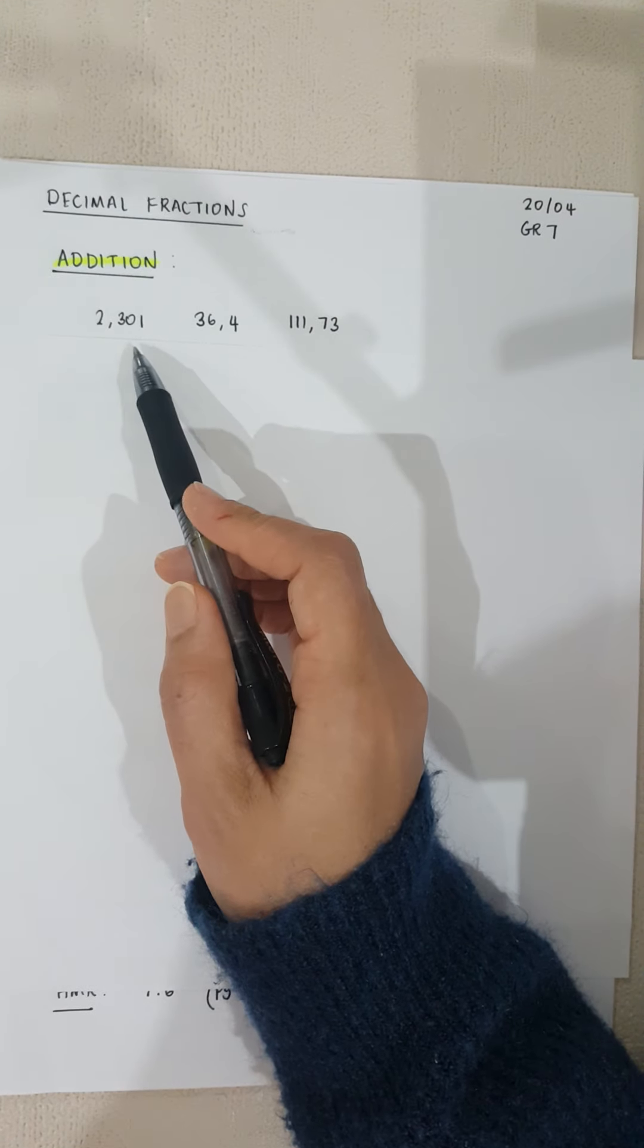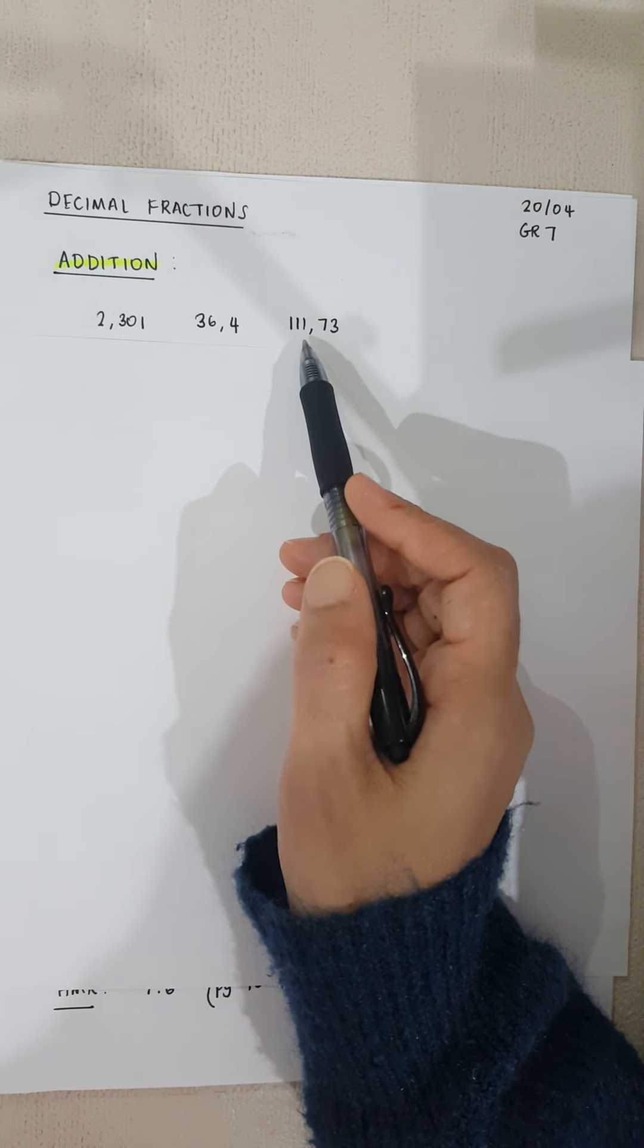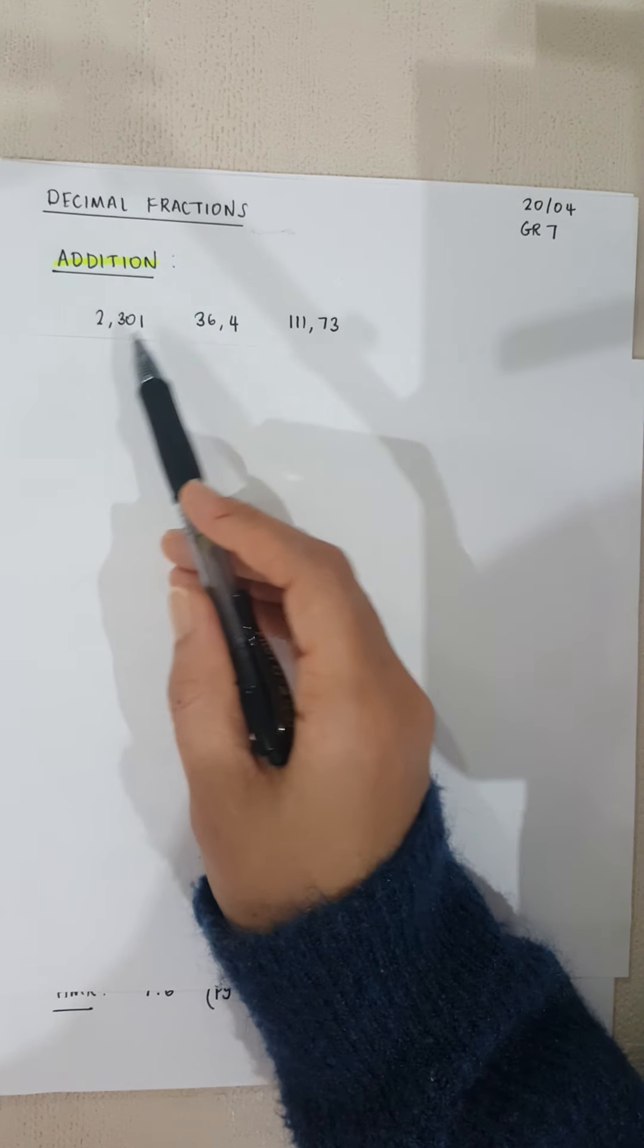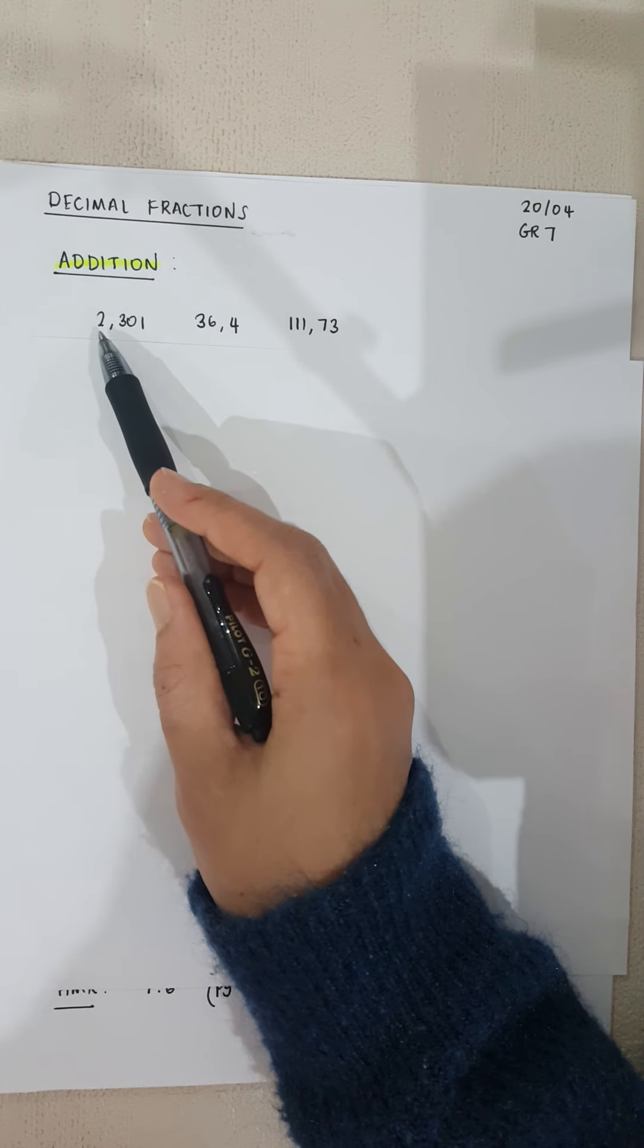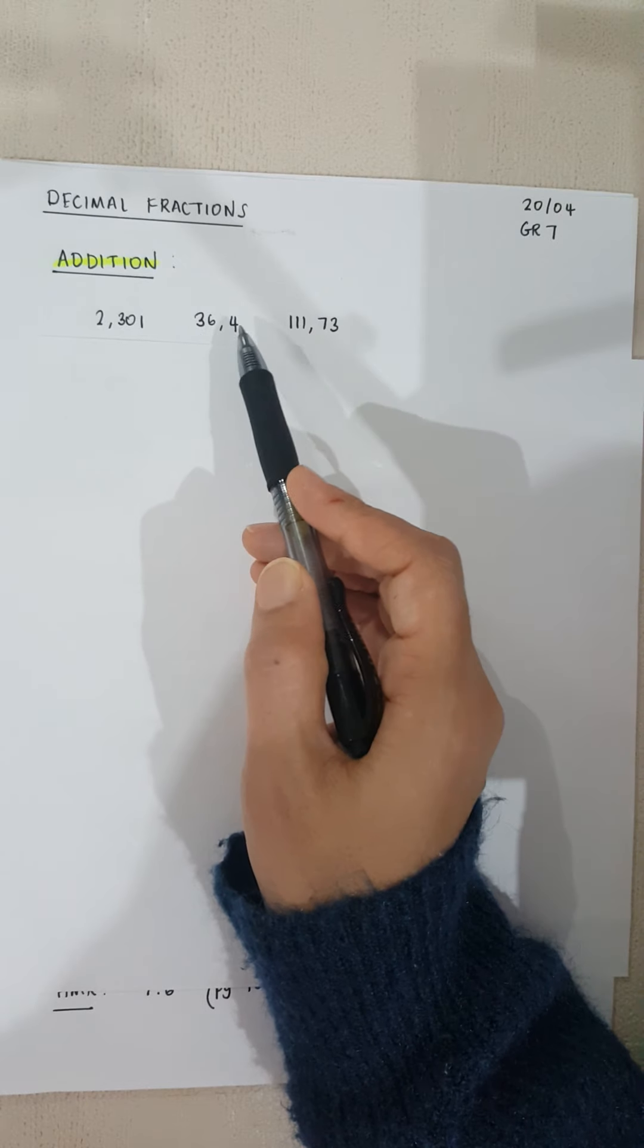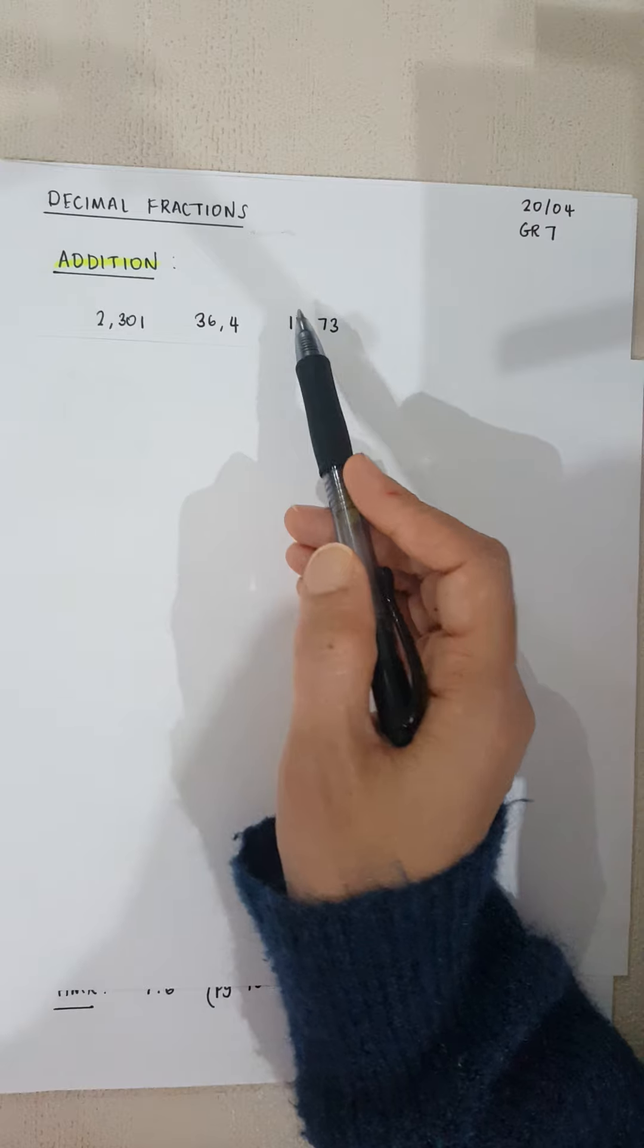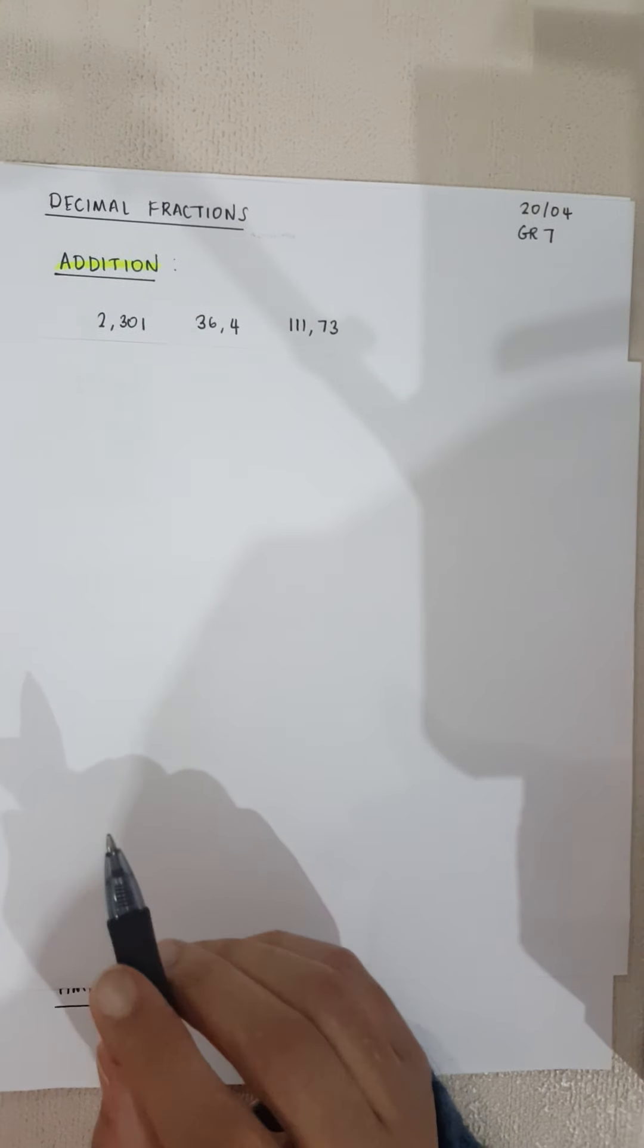If I have these numbers here, I've got 2.301, 36.4, and 111.73. Can you see these are three decimal numbers? We have a whole number and then we have a fraction part of it. These three numbers are called decimal fractions.